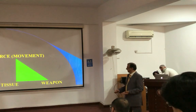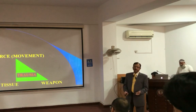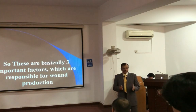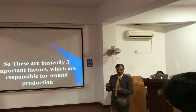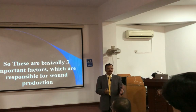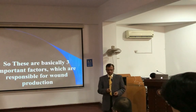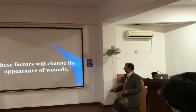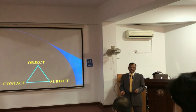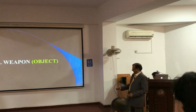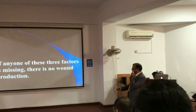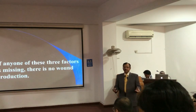These three components produce trauma. They are also the factors which change the appearance of the wound, because when we study each component — object, subject, and contact — they each influence the wound's appearance. If any one of the factors is missing, trauma will not occur. The combination of all three results in trauma.